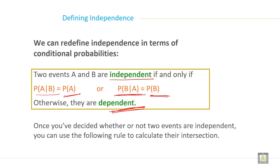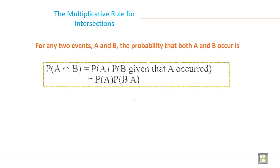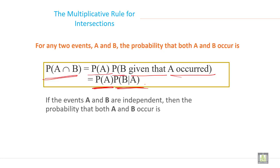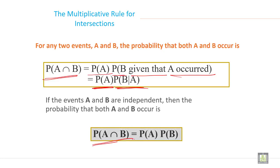Once you have decided whether or not two events are independent, you can use the following rules to calculate their intersection. For any two events A and B, the probability that both A and B occur is: probability of A intersection B equals probability of A multiplied by probability of B given A. If the events A and B are independent, then the probability that both A and B occur is probability of A intersection B equals probability of A multiplied by probability of B.